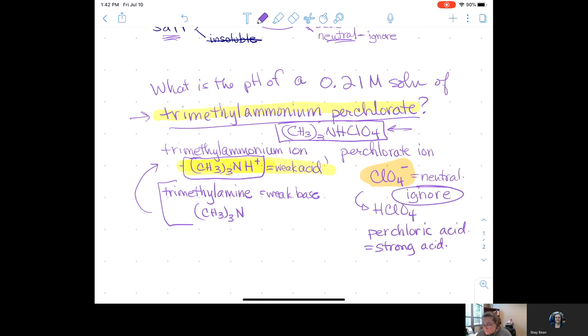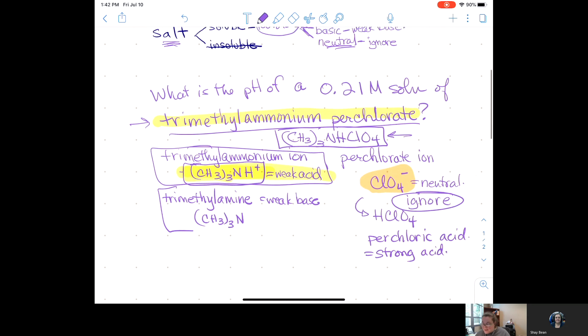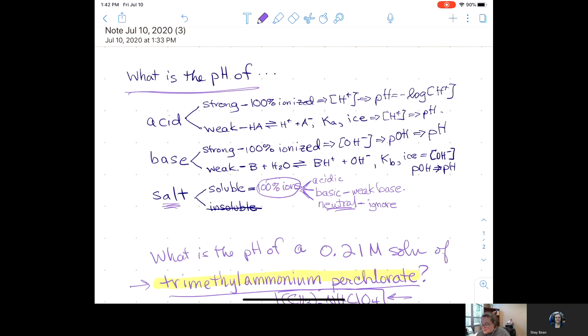So, once you decide you've got a neutral ion, you can ignore it. So, we're over here just working with the trimethylammonium ion. We do not have trimethylamine in our container. We have the trimethylammonium ion, which is a weak acid. And how do we find the pH of a weak acid? Once you figure out that it's an acidic ion, it will be a weak acid. That's the only way it happens. None of your ions are going to be strong.